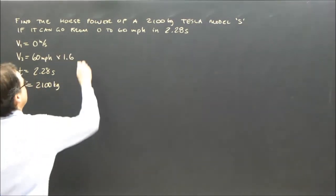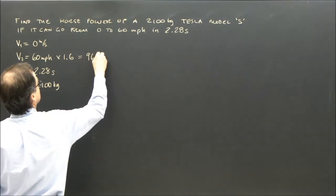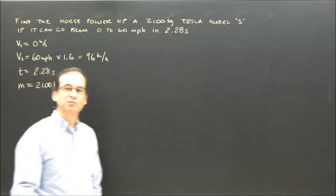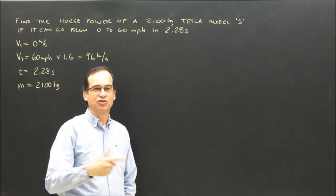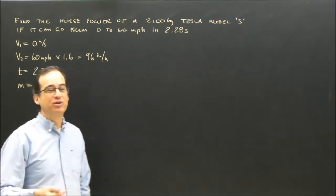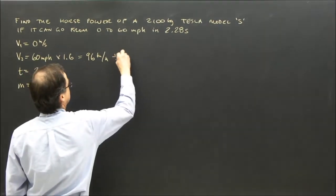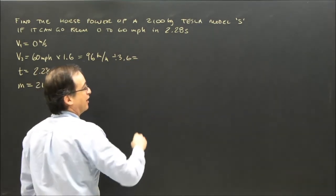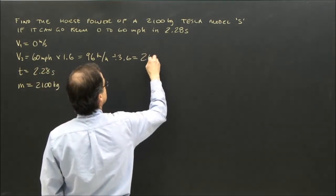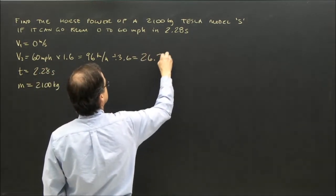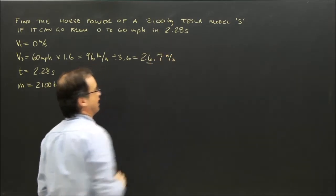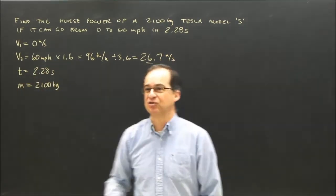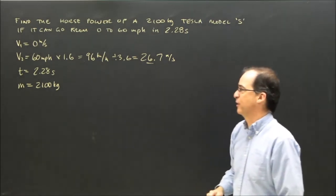That equals 96 kilometers per hour. Now we have kilometers per hour, and we need to turn it into meters per second. We divide by 3.6, which equals 26.7 meters per second. Now we know how fast the Tesla is going at the end of the acceleration period.